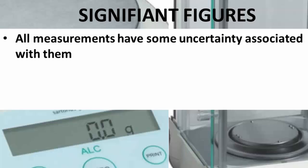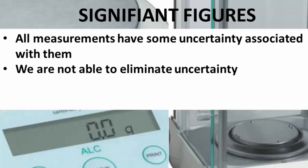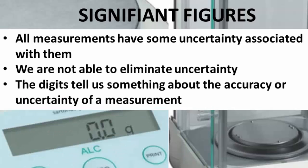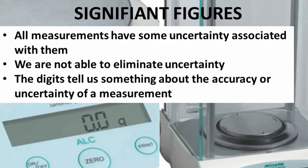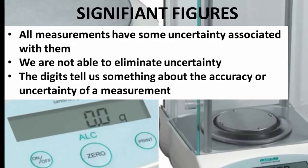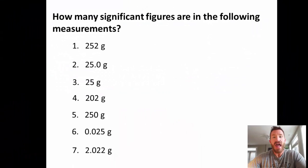All measurements have some uncertainty associated with them. We are not able to eliminate uncertainty with measurements. The digits tell us something about the accuracy or uncertainty of a measurement.